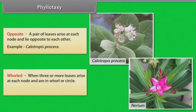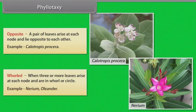Whorled: when three or more leaves arise at each node and are in whorl or circle. Example: Nerium oleander.